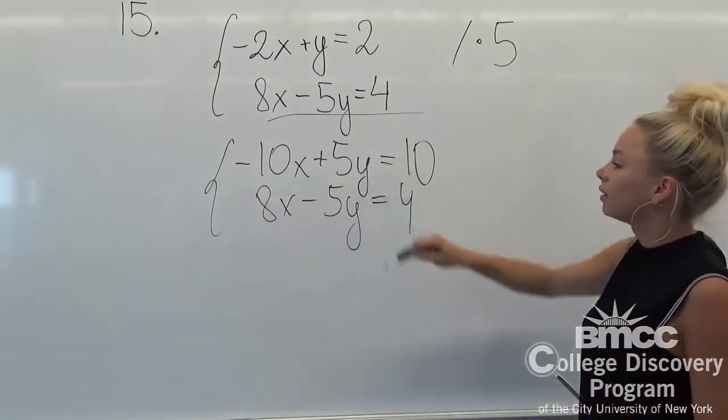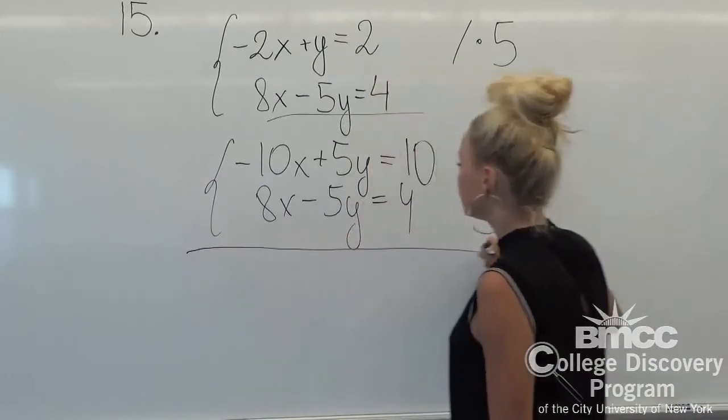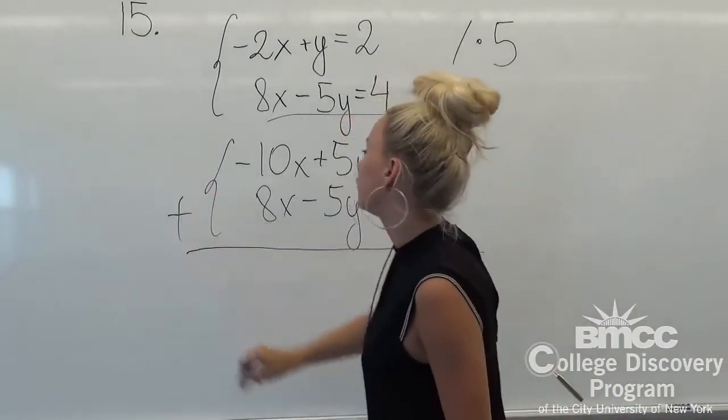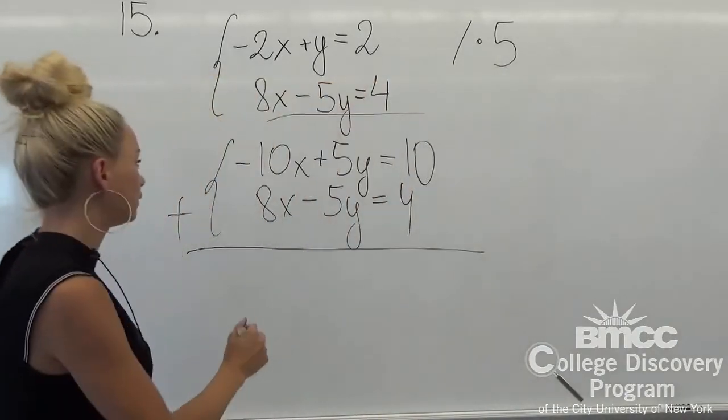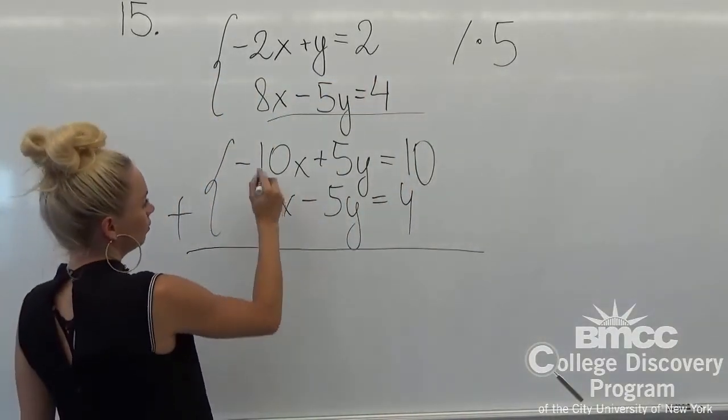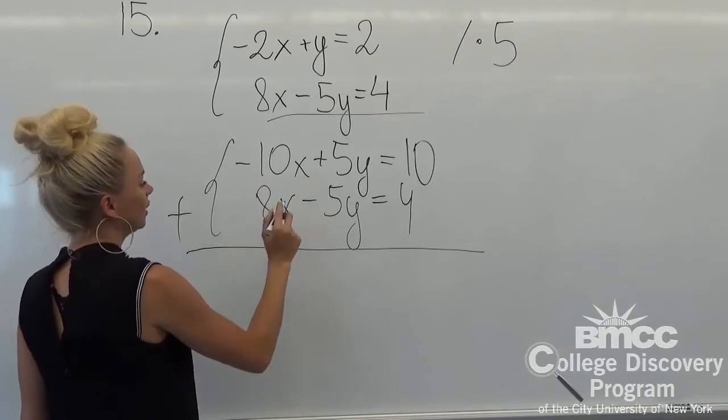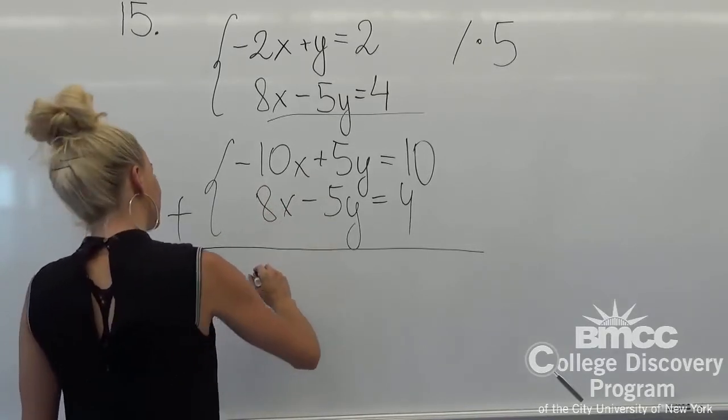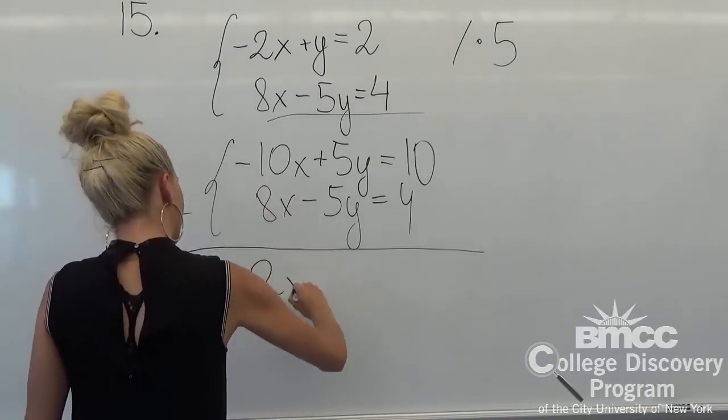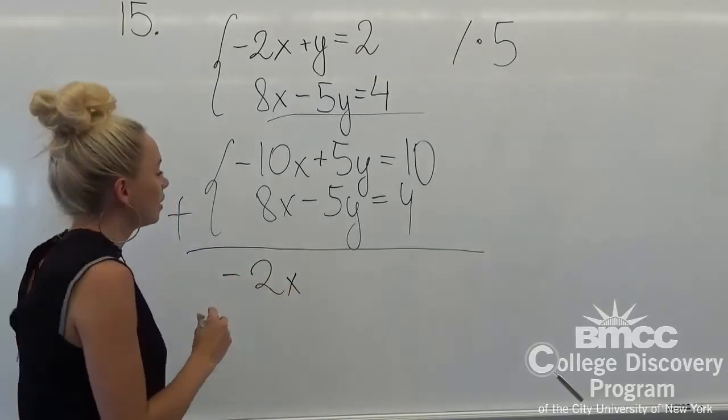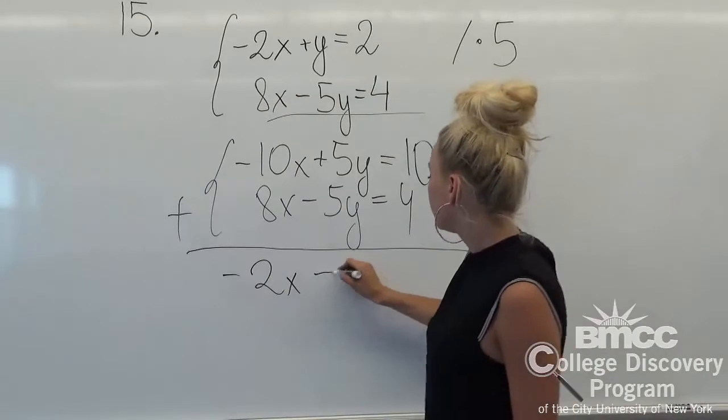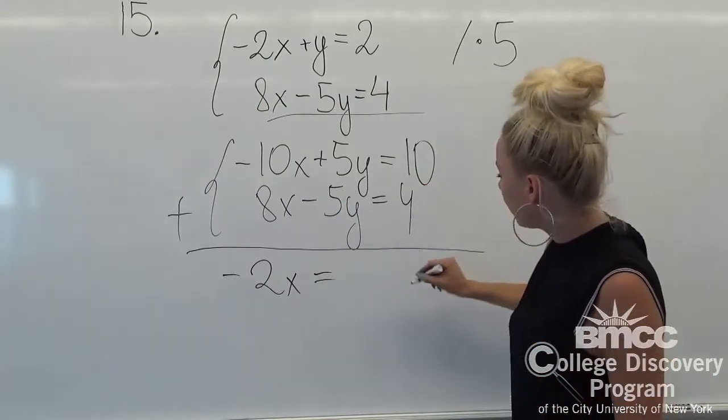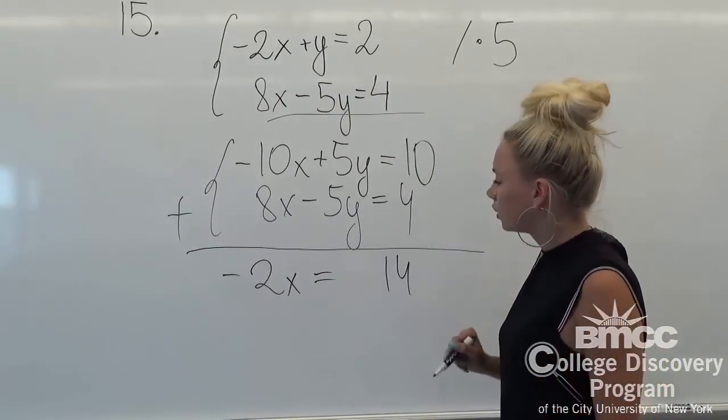Right now we can see that if we're going to add both of those equations, we're going to have minus 10x plus 8x is equal to 2x, negative 2x. And our y will cancel out. So what we have left is just 14 because 10 plus 4 is 14.